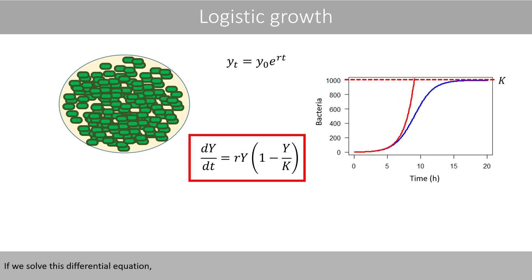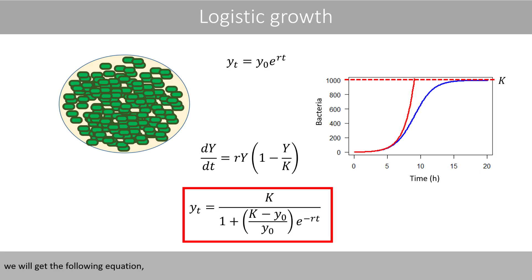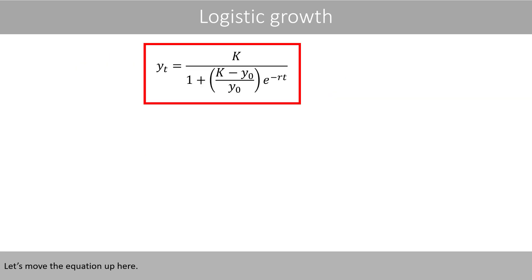If we solve this differential equation, we'll get the following equation, where y-zero is the initial number of bacteria in this case. Let's move the equation up here.